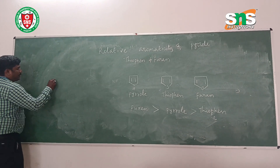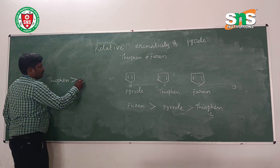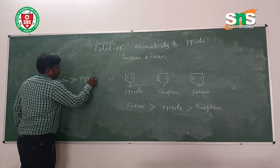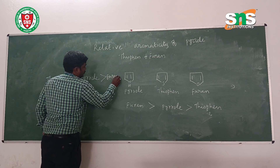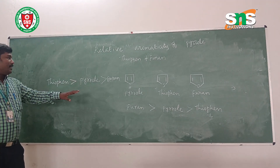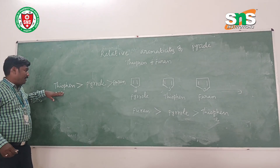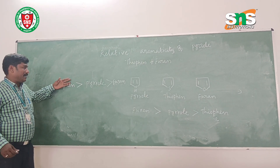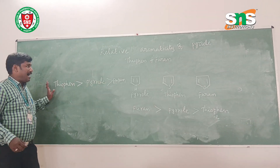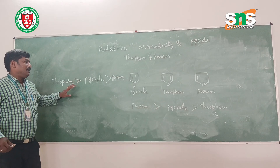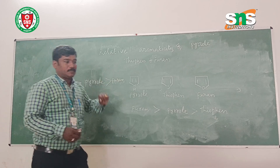Thiophene is having the better aromaticity among all these compounds, followed by pyrrole, then furan. The aromaticity depends upon the parameters of that hybrid structure. Thiophene has better aromaticity than pyrrole, and pyrrole has good aromaticity than furan. So the order of relative aromaticity is: thiophene, followed by pyrrole, then furan.